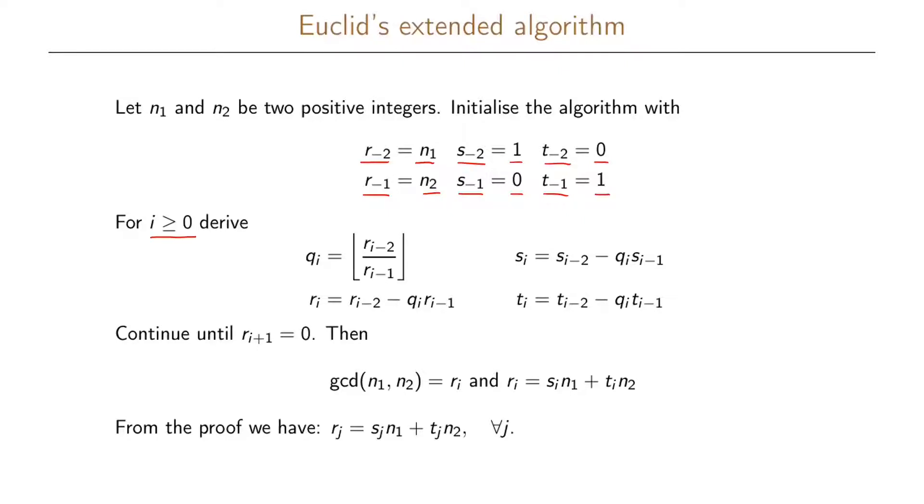We derive first q_i which is equal to r_{i-2} divided by r_{i-1}, and then we round this down to the nearest integer. Then we compute r_i as r_{i-2} minus q_i times r_{i-1}. Then we update s_i as s_{i-2} minus q_i times s_{i-1}, and we do this until we have r_{i+1} equals 0. And when we have that, we know that r_i will be the greatest common divisor between n1 and n2, and we can write r_i as s_i times n1 plus t_i times n2.